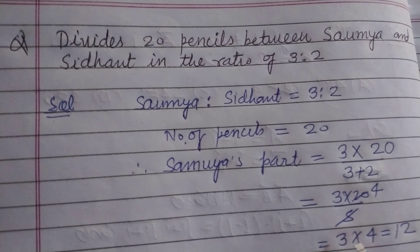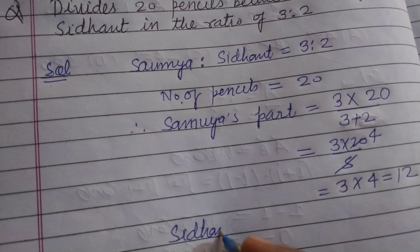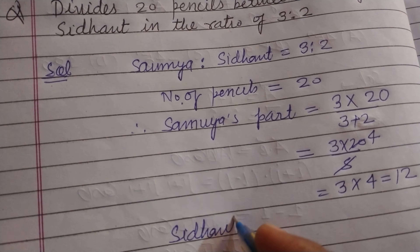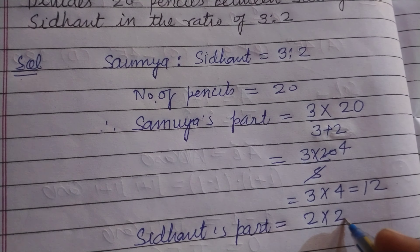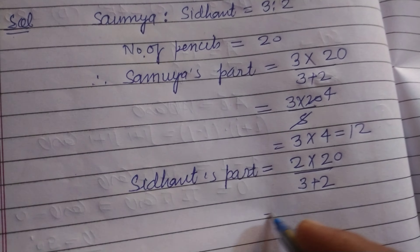Saumya's part is 12. For Sidhant's part, the number of pencils is: ratio of 2 into number of pencils upon total ratio. So this is 2 into 20 upon 5. 5 goes into 20 four times, so 2 into 4 equals 8.